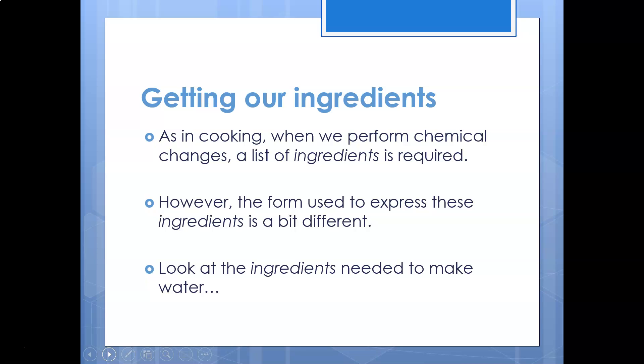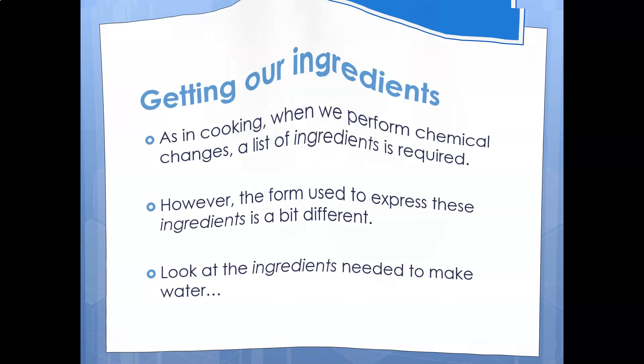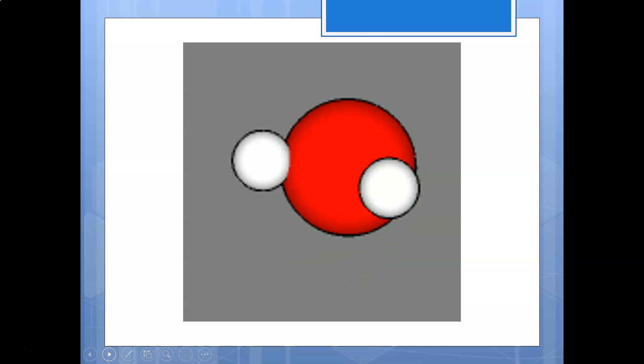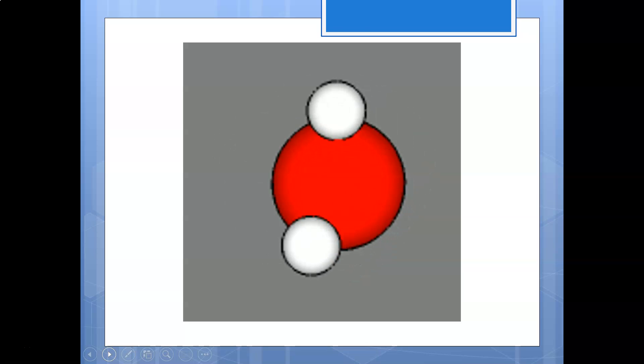So that is a chemical reaction. Chemical reactions in the lab are the same: we have ingredients and then we have a product. But in the case of our chemical reactions we call them reactants which are our ingredients and products which are our outcome.